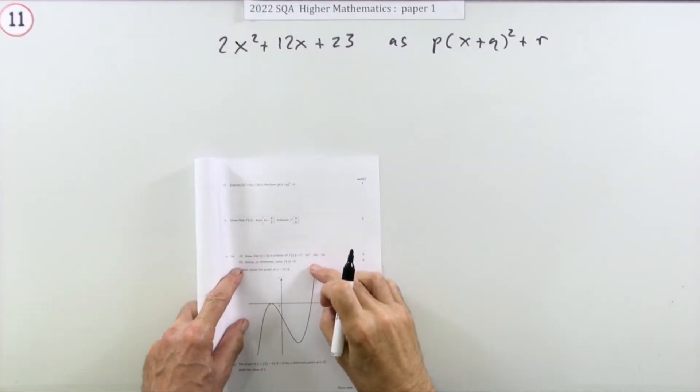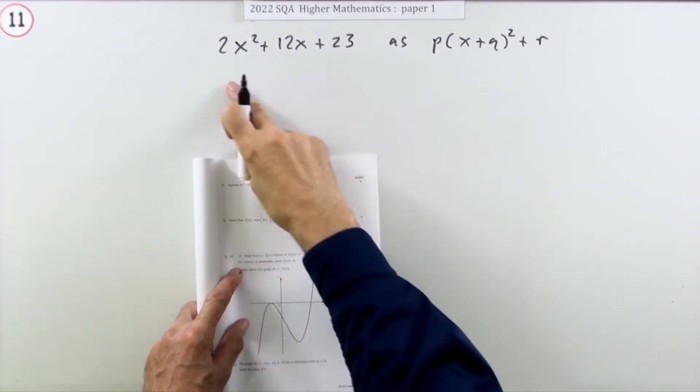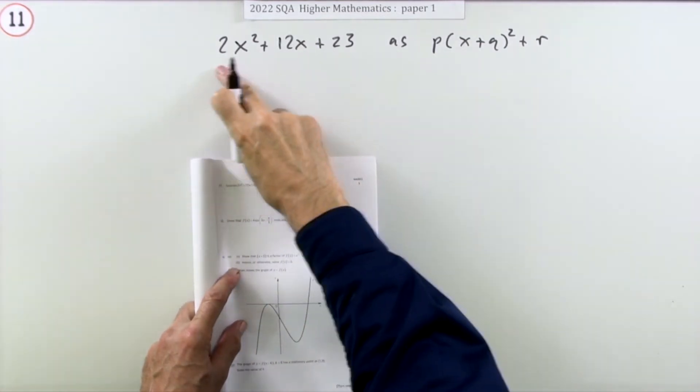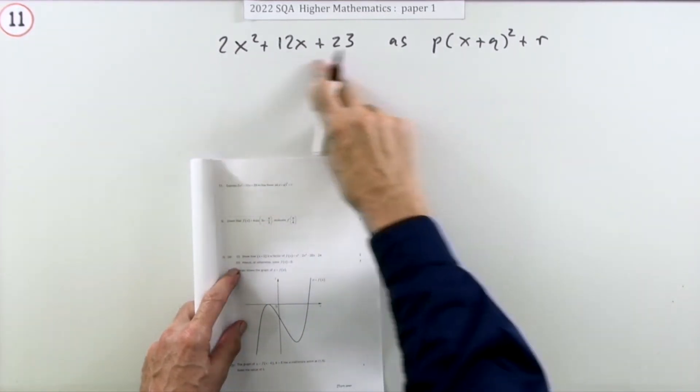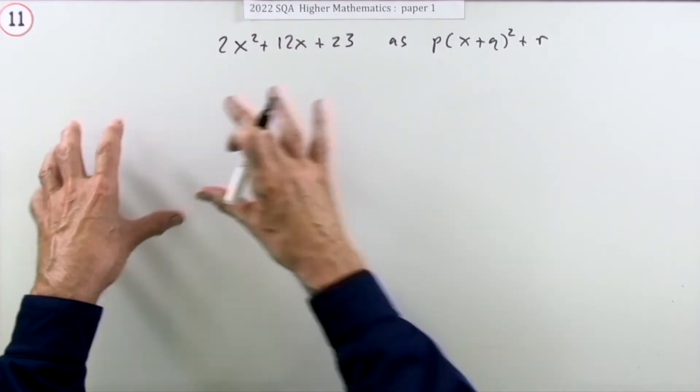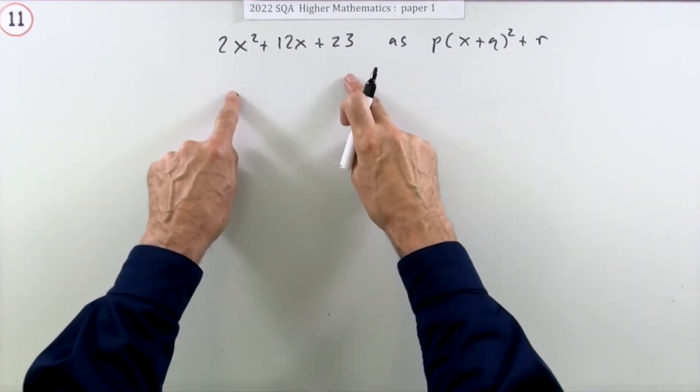Number 11 from the 2022 Higher Maths Paper 1, a 3-mark question to complete the square. It's a simple question you could do in your head, but there are basically two techniques: the arithmetical technique and the algebraic technique.